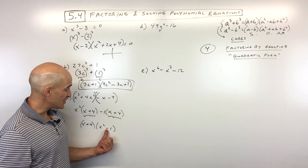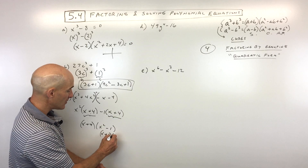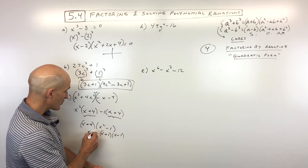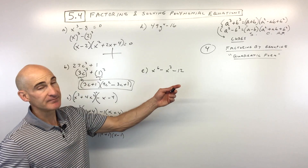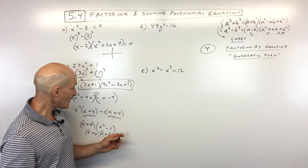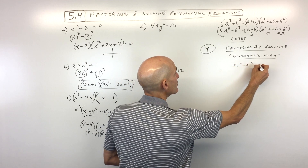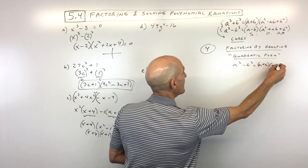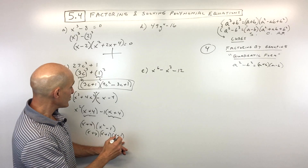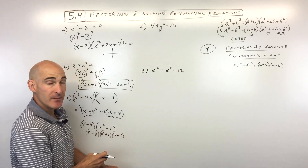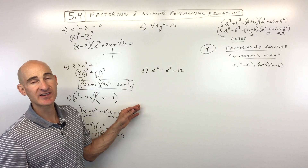Notice that x squared minus 1 is a difference of two squares, which factors further to x plus 1 times x minus 1. So the fully factored form is x plus 4 times x plus 1 times x minus 1. The difference of two squares pattern is a squared minus b squared equals a plus b times a minus b. If this were equal to zero, you'd set each factor equal to zero, solve, and those solutions are your x-intercepts.